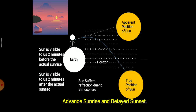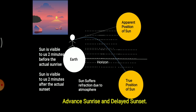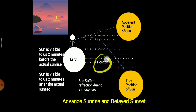The second feature of atmospheric refraction is advanced sunrise and delayed sunset. Imagine this as the earth's surface with a person residing on it. The true position of the sun is here. The sun is emitting rays of light, and here different air molecules and different atmospheres are there, continuously varying.